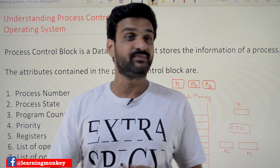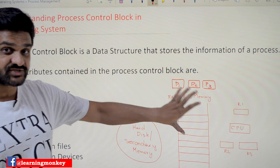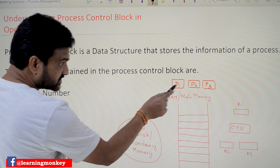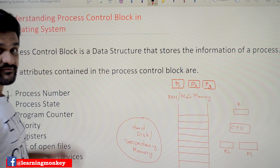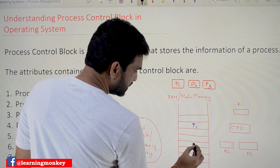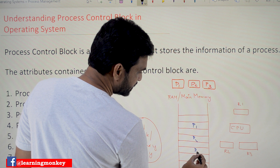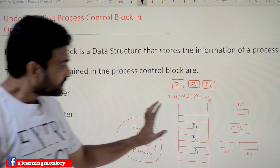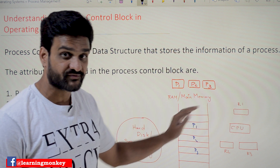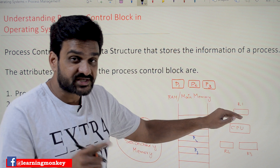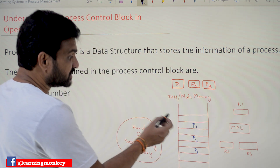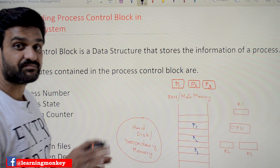Some information regarding each and every process will get maintained, and that block of data about the process is what we call a Process Control Block. Let's try to understand this concept in detail using the same diagram we've been using from the last five to six videos. In this environment, three processes are running: P1, P2, and P3. Let's assume P1, P2, and P3 are in the ready state on memory. If P1 is in the running state, the instructions of P1 are transferred from main memory to the CPU and executed instruction by instruction.